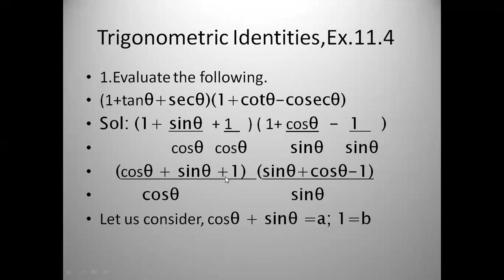For the second bracket, with LCM sin θ: 1 into sin θ gives sin θ; cos θ/sin θ gives cos θ (same denominator); and −1/sin θ gives −1. So the second bracket becomes (sin θ + cos θ − 1) / sin θ.